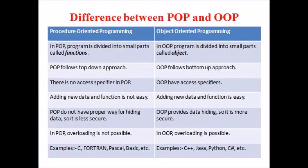The difference between POP and OOP is that in POP the program is divided into smaller parts called functions, whereas in OOP it is divided into smaller parts called objects. POP follows a top-down approach — first the main module is developed, tested, debugged, and then the other modules are developed. Whereas OOP follows a bottom-up approach, which is just the reciprocal of POP.